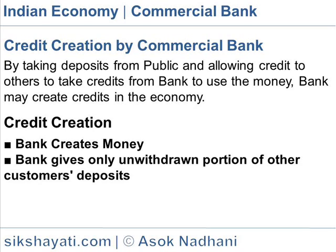Then Y's cash will rise by Rs.900. Y will, like X, keep one tenth of the 900 as reserve and lend out the balance of Rs.810. Thus, in the banking system as a whole, there will be deposits amounting to about 10 times the original rise in the cash reserve.